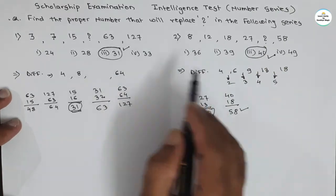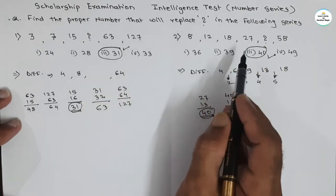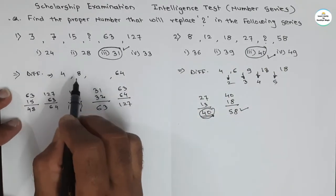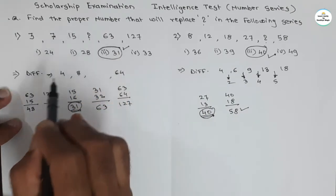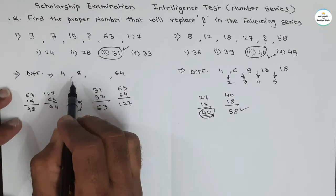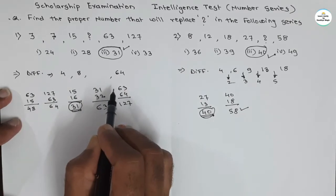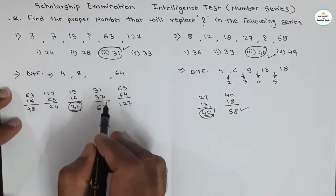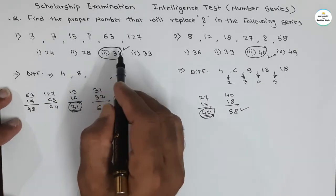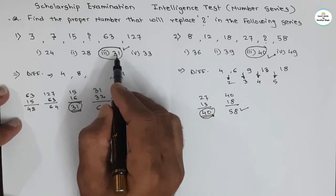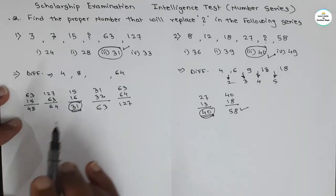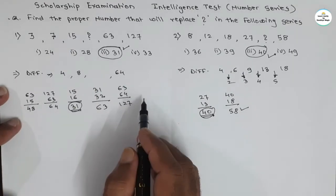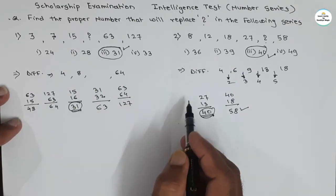We have now seen two series. In both cases, we found the difference between consecutive numbers, and with the help of the rhythm in those differences, we found the proper missing number. The method is: first find the difference, then see whether there is any rhythm. Once we find that rhythm, we can find the number that replaces the question mark.